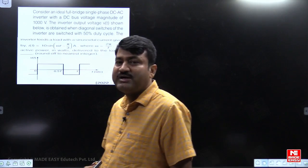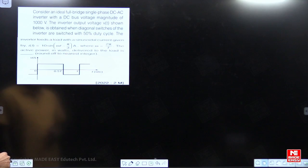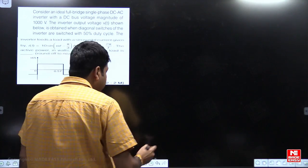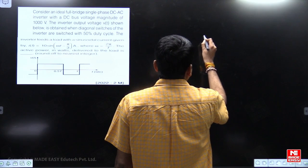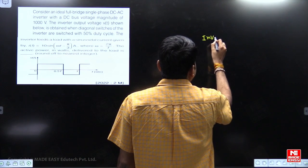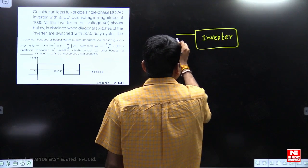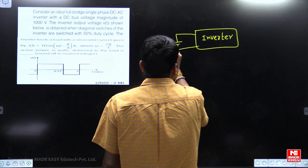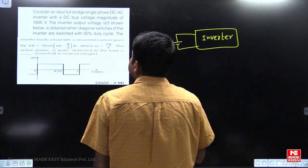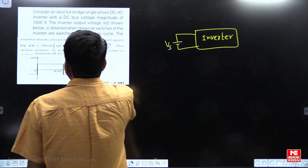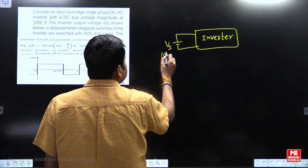Now please refer this question, my dear students. It was asked in gate 2022 in inverters. Consider a ideal full bridge single phase DC to AC inverter with a DC bus voltage magnitude of 1000 volts. So see here, this is inverter. This is your inverter. So supply voltage is 1000 volts.